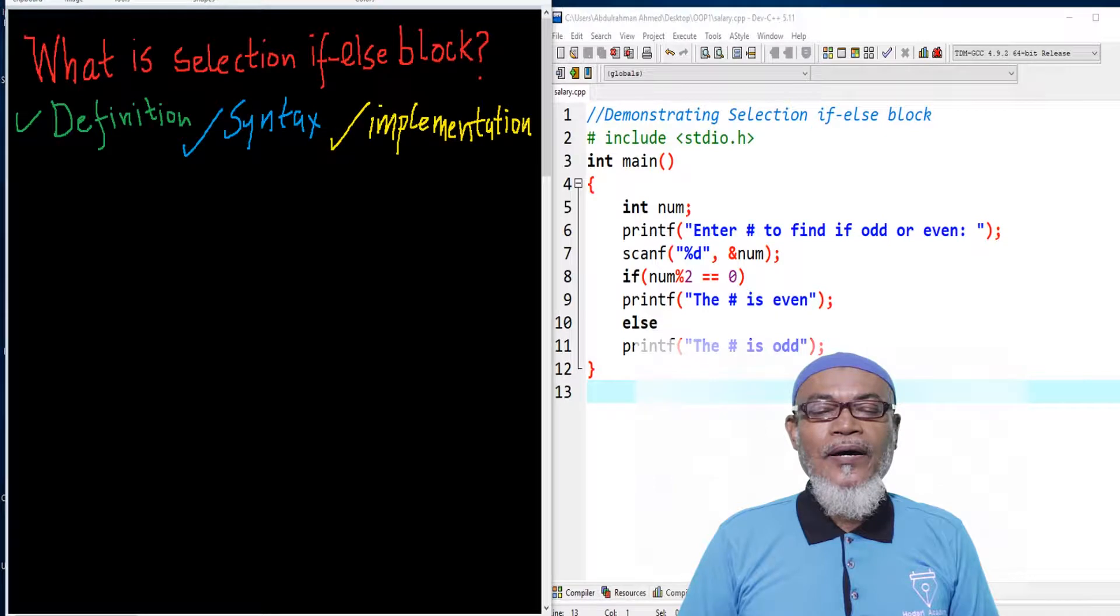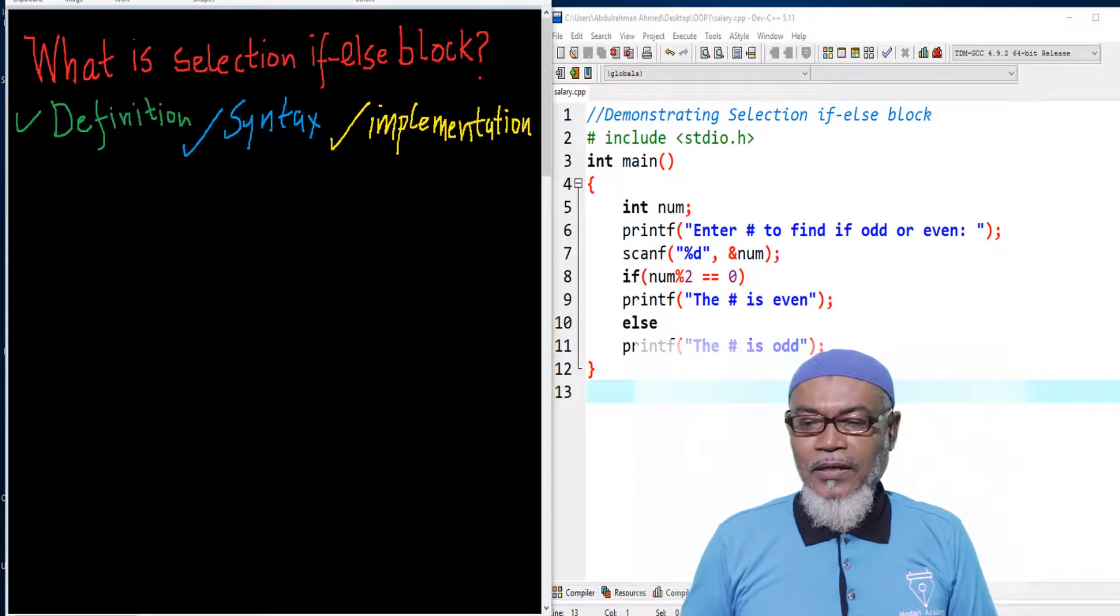When a condition is true, we execute a statement. When it's false, we exit the program. Today we're going to discuss the selection if-else block. In this journey, we'll cover the definition, syntax, and implementation.